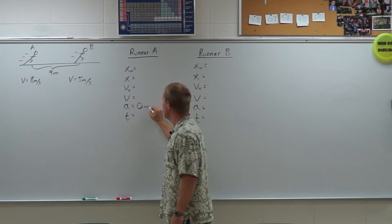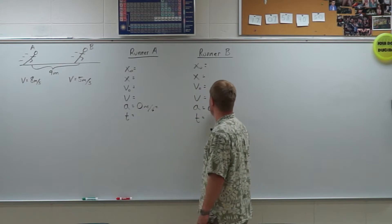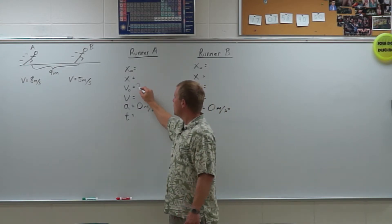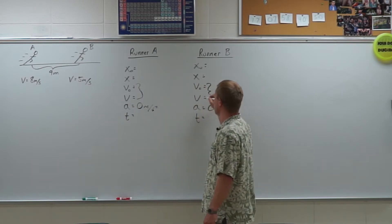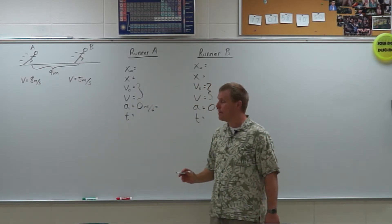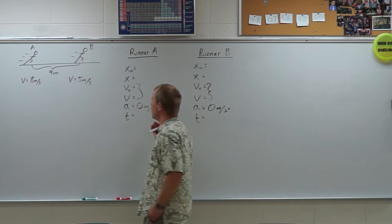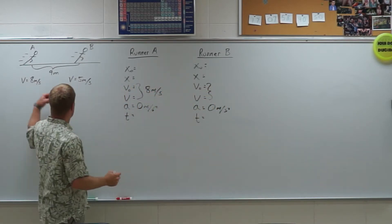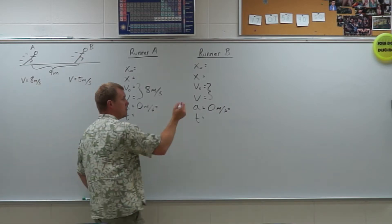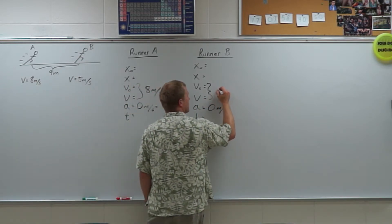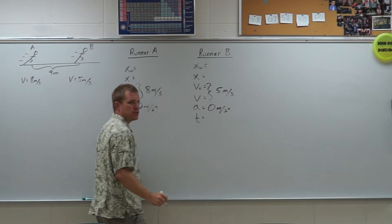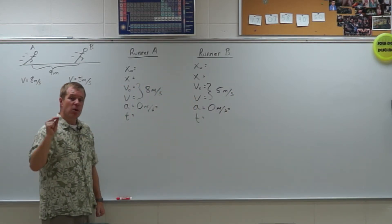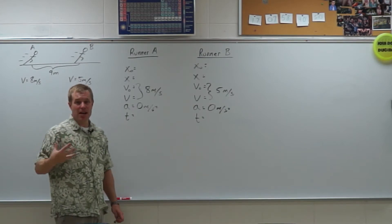Constant velocity means our accelerations are going to be zero for both of them. Also, our velocities are going to be the same. So the initial and finals will be the same. So let's set up runner A. So runner A is moving at 8 meters per second in the positive direction. I'm going to call the right my positive direction. Runner B is also moving in the positive direction, but this runner is running at 5 meters per second.